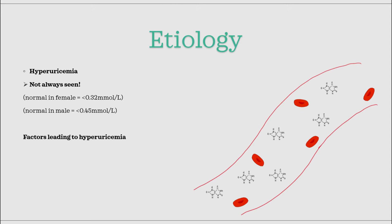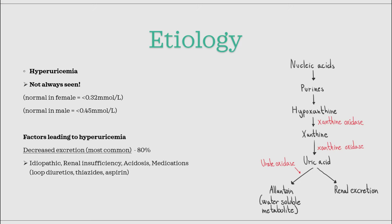As uric acid is a degradation product resulting from degradation of purines, namely adenine and guanine, plus a few others, there are two main factors that can lead to hyperuricemia. The most common cause is decreased excretion of uric acid, which accounts for about 4 out of 5 cases. The underlying reasons are mainly a condition in the kidney — either directly renal insufficiency, or a side effect from medications that act on the kidney, like loop diuretics, thiazide diuretics, aspirin, or ibuprofen.